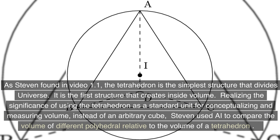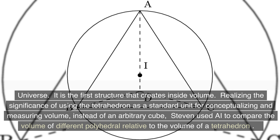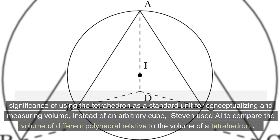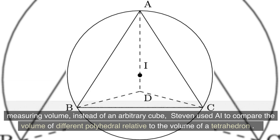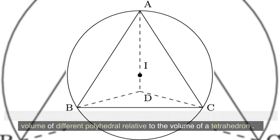Realizing the significance of using the tetrahedron as a standard unit for conceptualizing and measuring volume, instead of an arbitrary cube, Stephen used AI to compare the volume of different polyhedra relative to the volume of a tetrahedron.